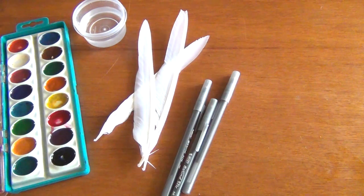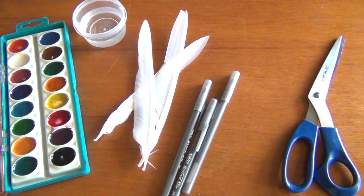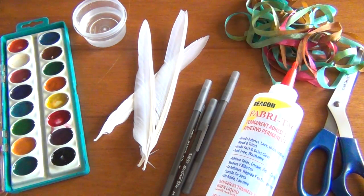For this next project you'll need any old set of watercolor paints, a little bit of water, some white feathers, plain old pens, scissors, Fabri-Tac, and of course your thin ribbons.